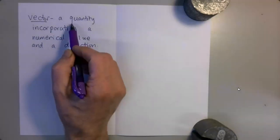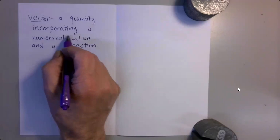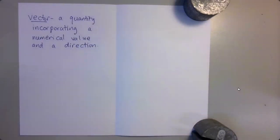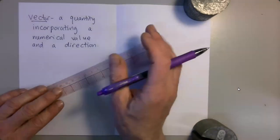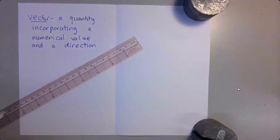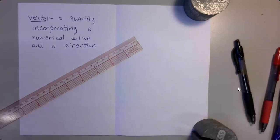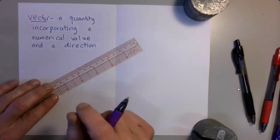So what is a vector? A vector is a quantity incorporating a numerical value and a direction. In a little bit, I'll be giving you some examples of vector quantities, but first, I'd like to discuss how we would represent a vector on the page.